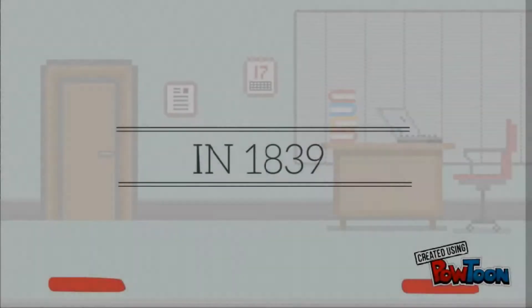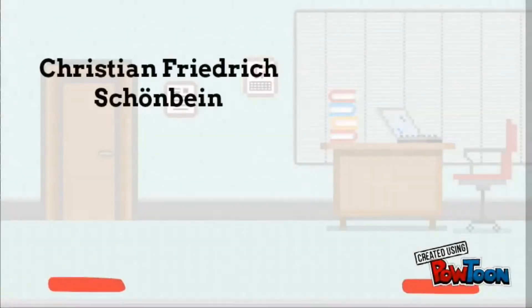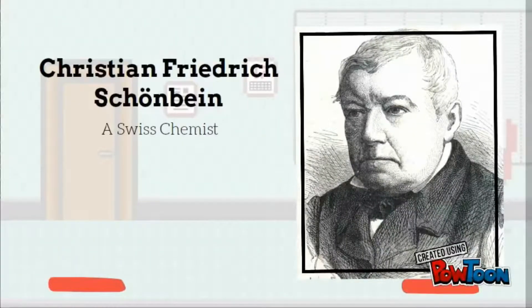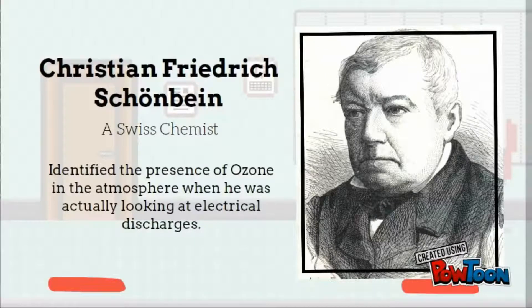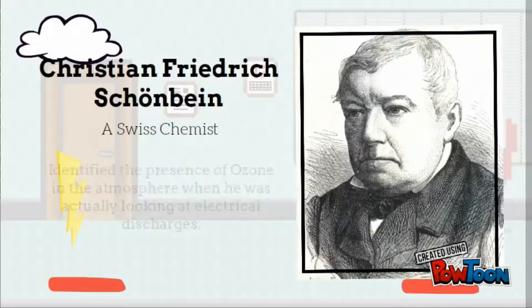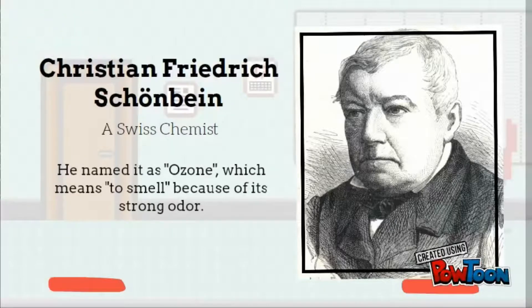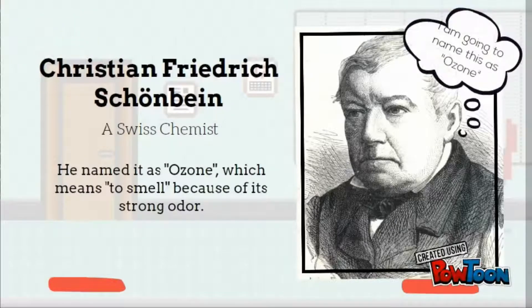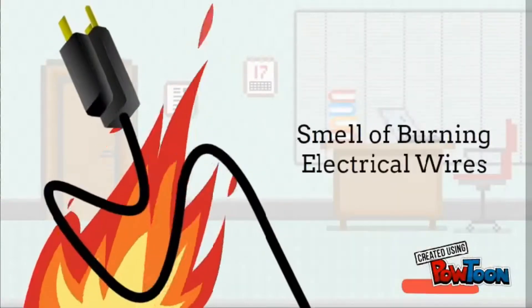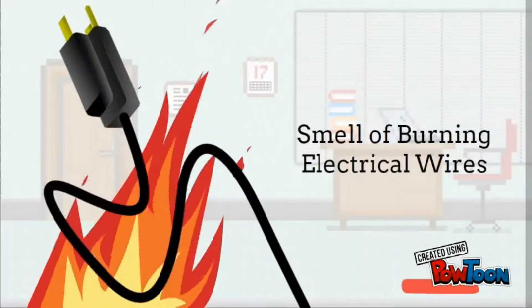In 1839, Christian Schoenbein, a Swiss chemist, first identified the presence of ozone in the atmosphere when he was actually looking at electrical discharges. He named it ozone, which means 'to smell' because of its strong odor, wherein ozone has been likened to the smell of burning electrical wires.